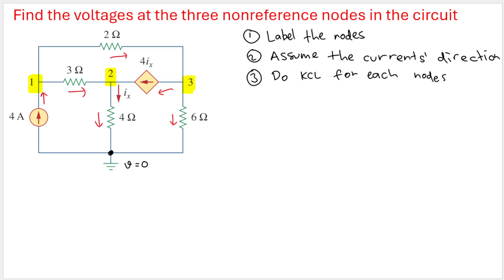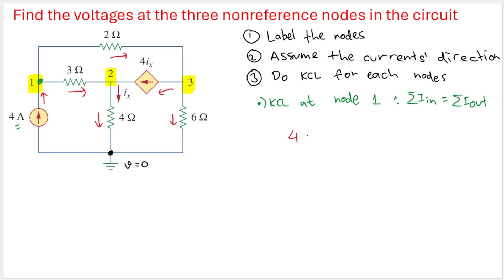Let's do KCL at node 1. KCL states that the sum of currents going in equals the sum of currents going out. The only current going in at node 1 is the 4-ampere current source, so we put 4 on the left-hand side. All other currents are going out.